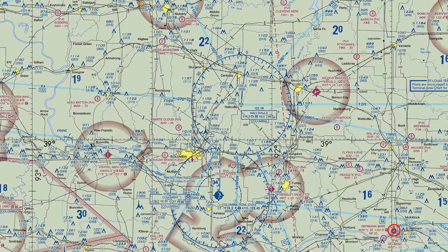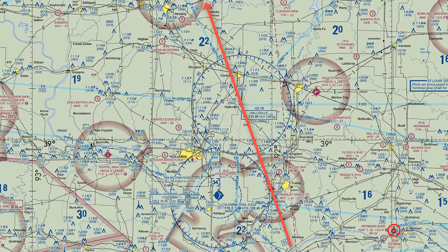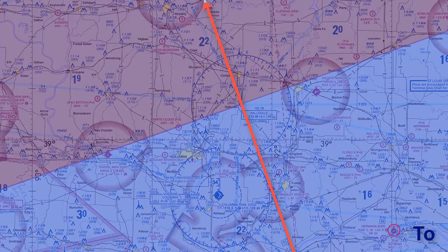Now let's focus on how the CDI needle will look in relation to the course we want. Remember that the course we want is 335 degrees. If we fly anywhere to the right of the course the needle will point to the left, indicating the course is to the left of where we are located. We see that if we are flying anywhere in the TO quadrant the flag will indicate TO and the needle will point to the left.